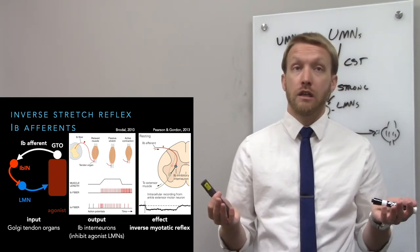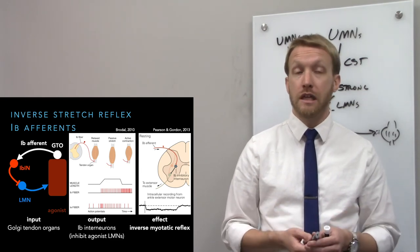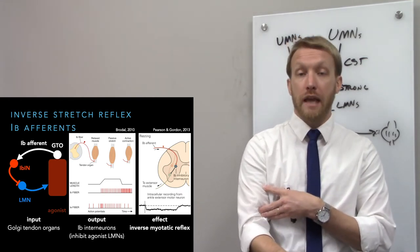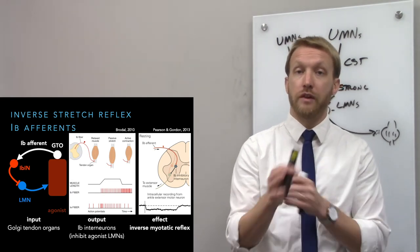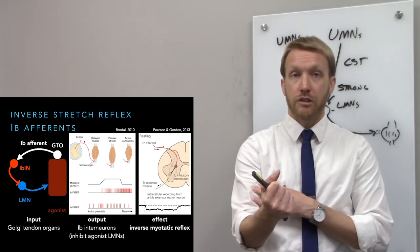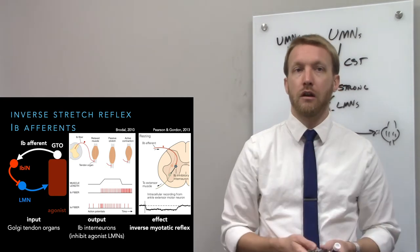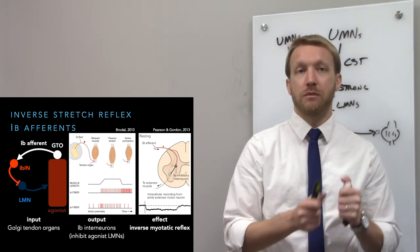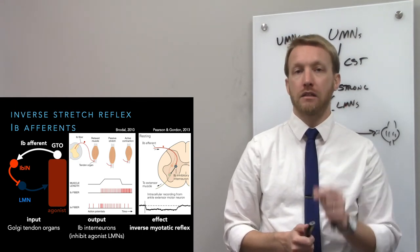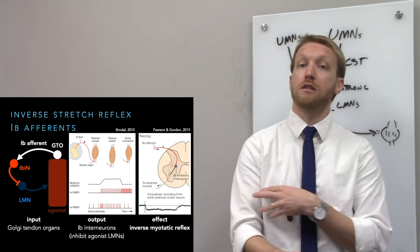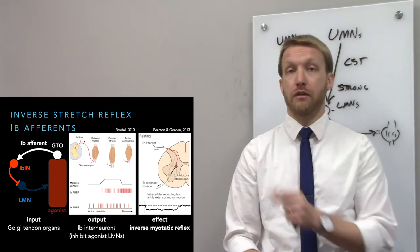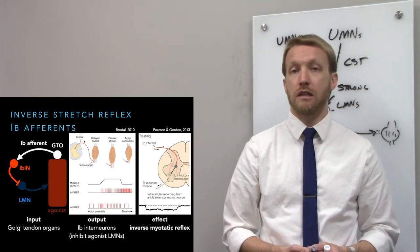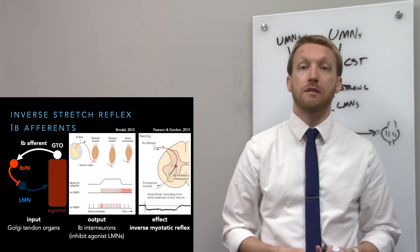We also have interneurons for the inverse stretch reflex, from Golgi tendon organs. If we put a lot of tension on a tendon — contraction without movement — those Golgi tendon organs turn on 1B afferents. 1B afferents stimulate 1B interneurons, which inhibit the agonist lower motor neuron, causing a decrease in muscle tone and relaxation. Recordings confirm this: when 1B afferents are stimulated, the lower motor neuron hyperpolarizes and becomes inhibited.